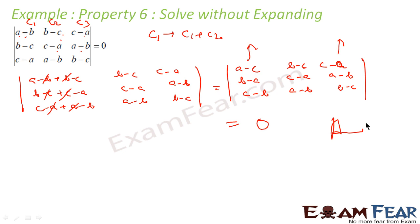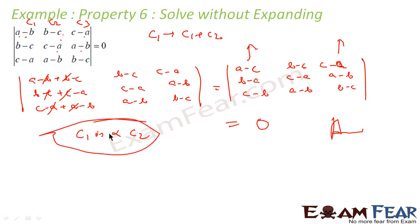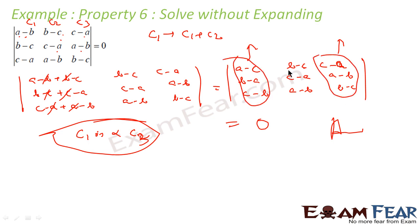Column 1 is proportional to column 3. Since the two columns are proportional, the whole determinant is 0 — that is our answer. Let's take one more example.